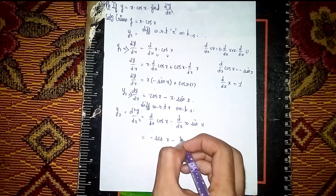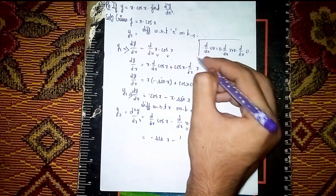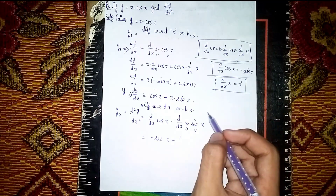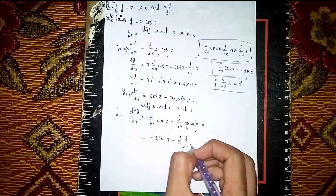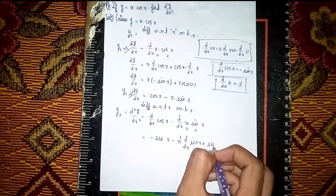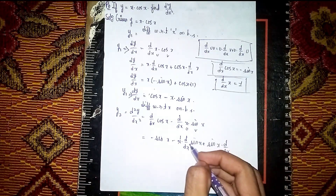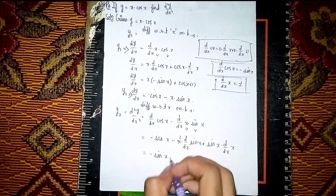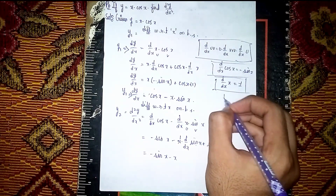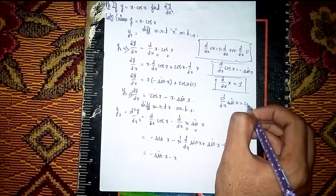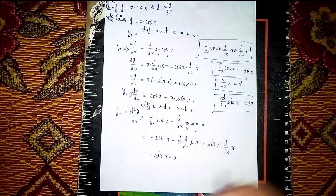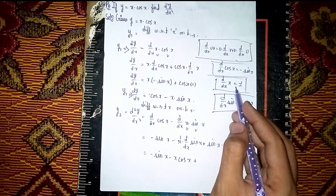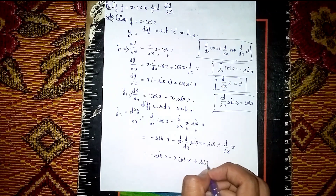Now d/dx of cos x is minus sin x. For the second term, we apply the product rule again. The formula is highlighted — don't get confused. d/dx of sin x is equal to cos x. So it becomes: x into cos x, plus sin x into 1, which gives x·cos x plus sin x.